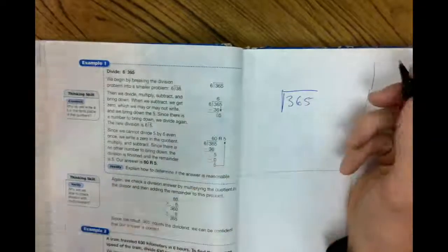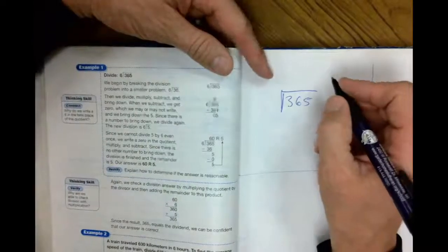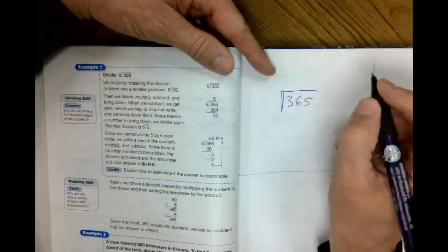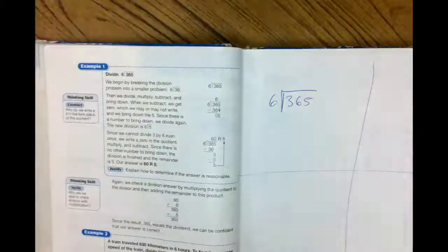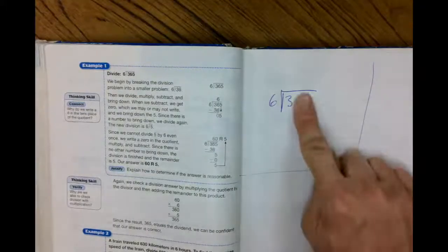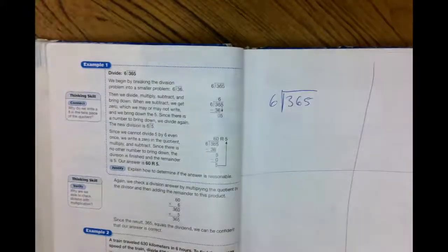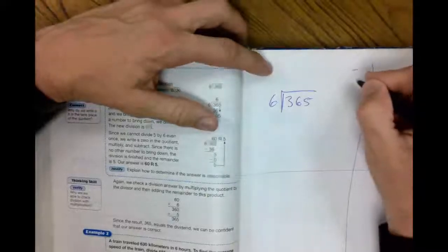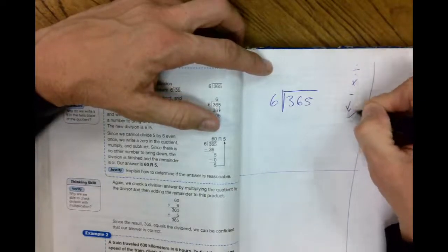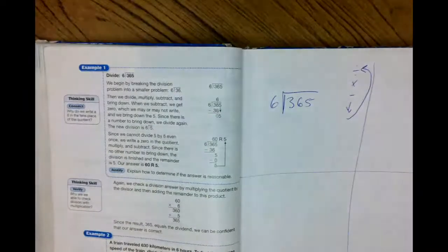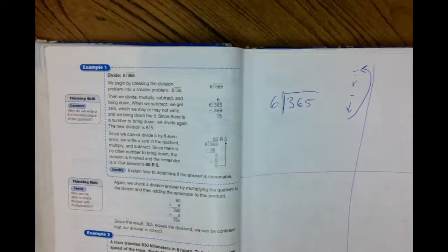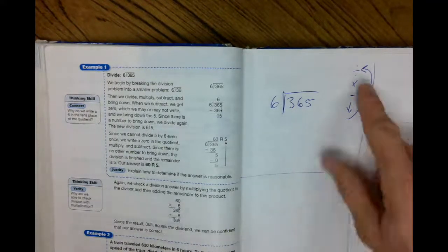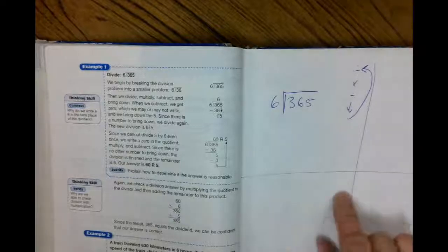Here's example number one that I would normally do on the board. We'll do it right in the box like you should normally be doing it. 365 is the amount of days in a year, and we want to divide that by six. So let's go ahead. How many times does six go into three? Oh, quick review. Divide, multiply, subtract, bring down. Do it again.